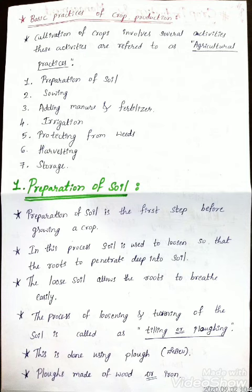In this process, soil is loosened so that the roots can penetrate deep into the soil. The loose soil allows the roots to breathe easily. The process of loosening and turning of the soil is called tilling or ploughing. This is done by using a plow, which is made of wood and iron.